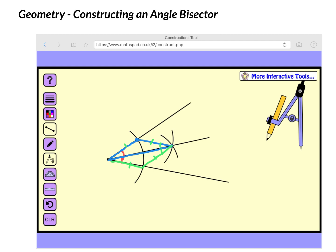So just using these simple tools, we were able to bisect this angle without needing a protractor. Again, if this helped you, please like and subscribe. Have a great day.